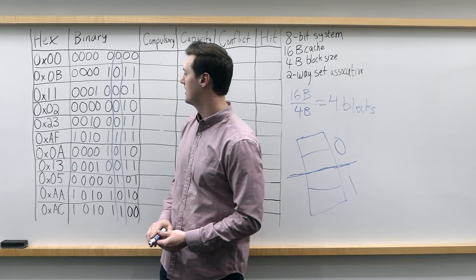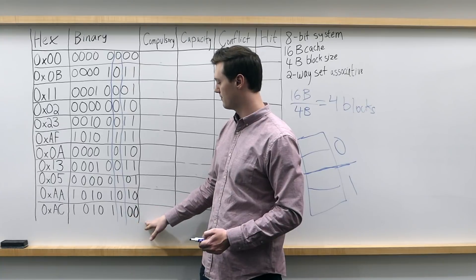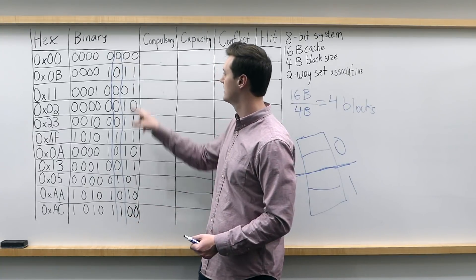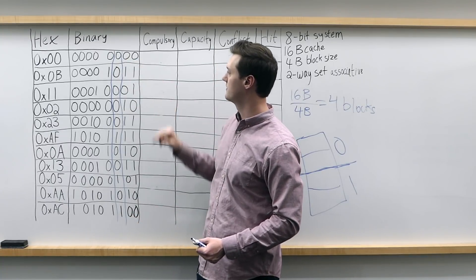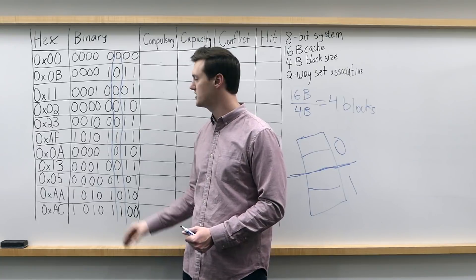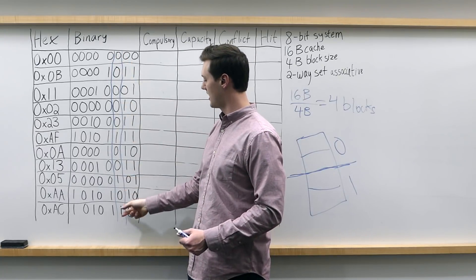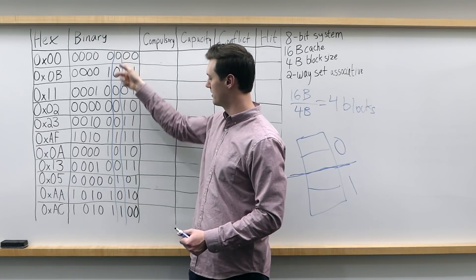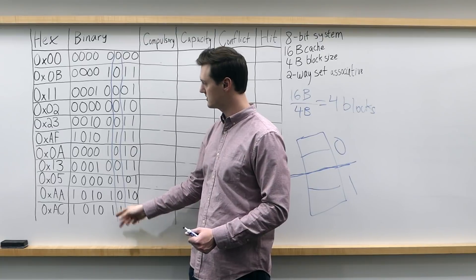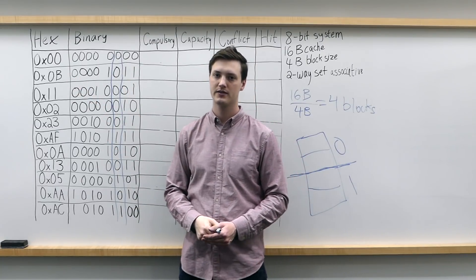I've represented this in binary numbers as well. Since we have 4-byte blocks, the 2 least significant bits will be the block offset, and then that 3rd least significant bit will be our set index, and then these 5 most significant bits will be our tag.